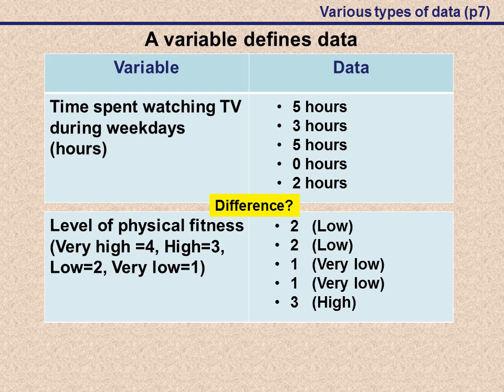The difference between these two: the first one we can see has numerical meaning. We can go do calculations, we can calculate the average number of hours we can spend watching TV, we can calculate the standard deviation, we can calculate the range. There's quite a lot of different calculations we can do, and these calculations lead to answers that make numerical sense.